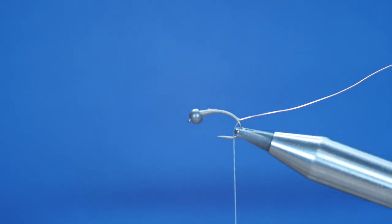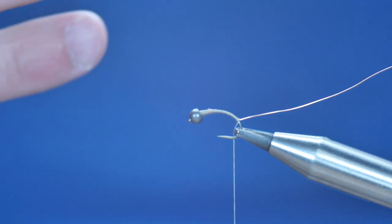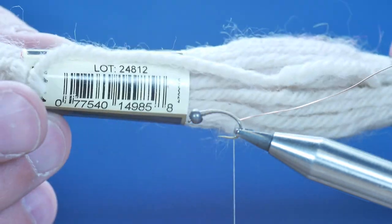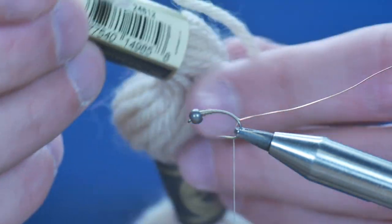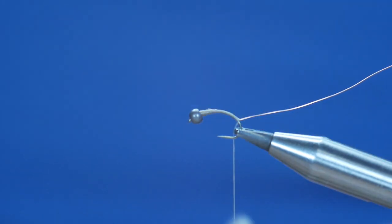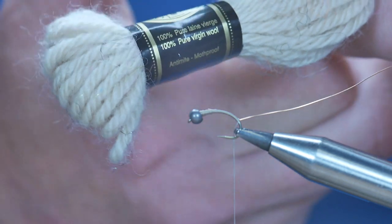Now for the body, you can use some cream dubbing, light dubbing, but what I'm going to do is just show you something else. This is from the local haberdashery, it's about 99 pence, some wool, and it's in a light cream. Good enough for Frank Sawyer, good enough for me.